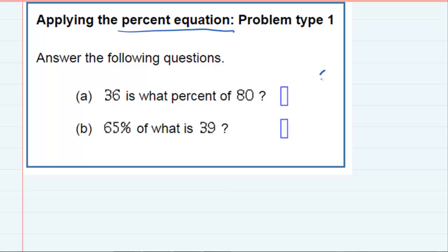The first is that 'of' is going to translate into multiplication. 'Is' will translate to equals, and then 'what,' that's what we're looking for. That's the unknown, so we'll use X to represent that.